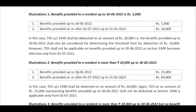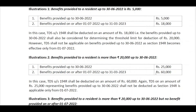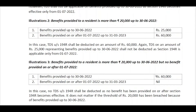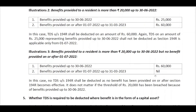Second scenario: if benefits provided up to 30th June are ₹25,000 — already exceeding the limit — and benefits provided after 1st July are ₹60,000, then for the pre-July ₹25,000 there is no TDS requirement, but on the post-July ₹60,000, TDS must be deducted on the full amount. Third scenario: if benefit provided up to 30th June is ₹6,000 and no benefit is given after July, then despite the ₹20,000 limit not being breached post-July, there is no TDS since no benefit is given after 1st July.